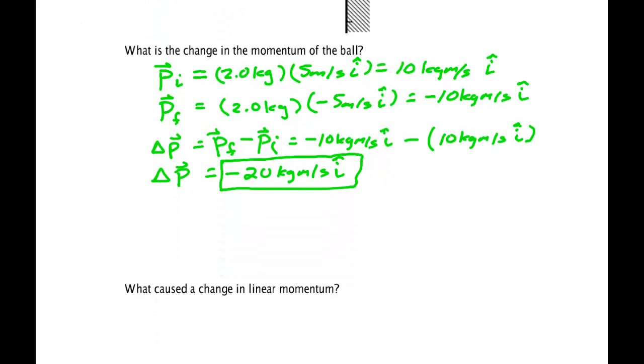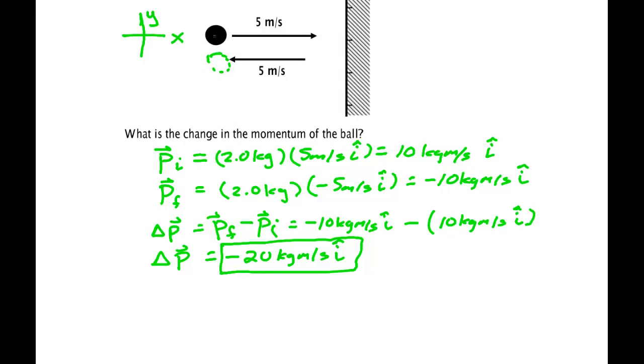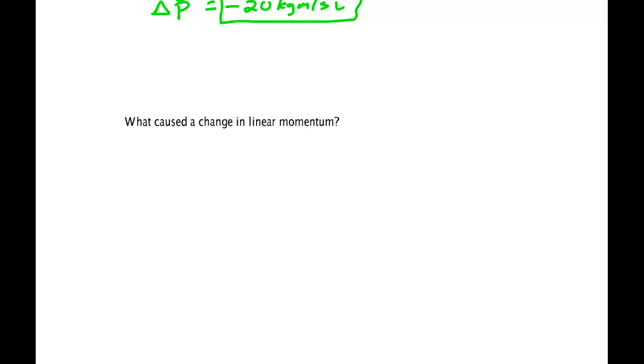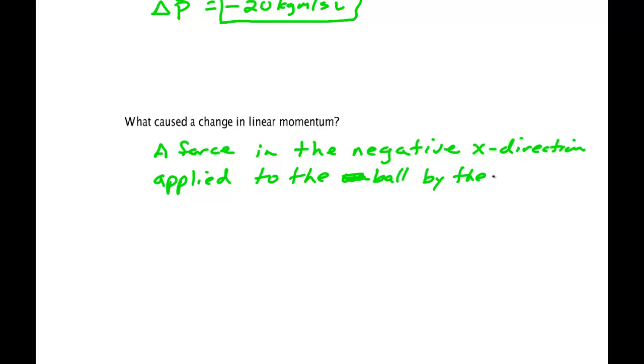If we now ask ourselves, what caused that change in linear momentum? Well, the ball would have gone this way forever, but something happened here which changed it. What happened was this wall applied a force upon that ball. So the answer to the question is what changed the linear momentum? A force in the negative x direction applied to the ball by the wall.